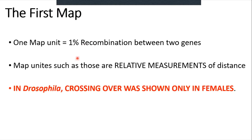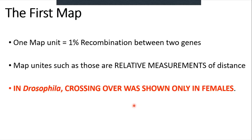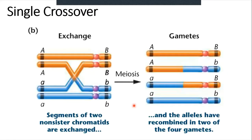This is the way to map genes on the chromosome — the first chromosomal map was done in this way. We use the term map units: one map unit equals one percent recombination between two genes. Map units are relative measurements of distance, not base pairs or centimeters. Importantly in Drosophila, crossing over was shown to occur only in females — there is no crossing over in males. This is one reason Drosophila is used as a model organism.